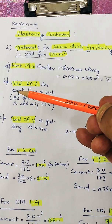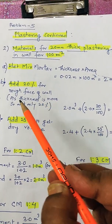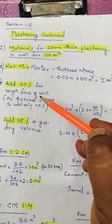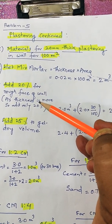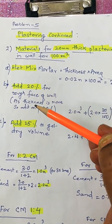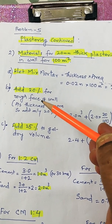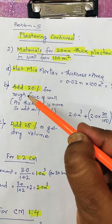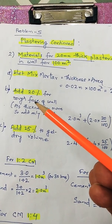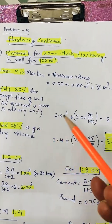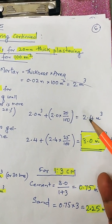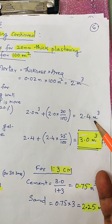Step B is to add 20% for the rough face of the wall. As the wall surface is rough and the joints are to be filled, we have to add 20% more. In 12mm plastering we added 30%, but here since the thickness is more, we add only 20%. So 2 cubic meters plus 20% gives a total of 2.4 cubic meters.